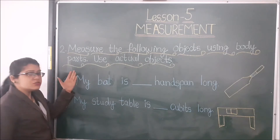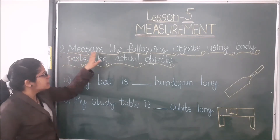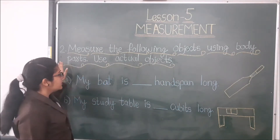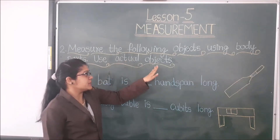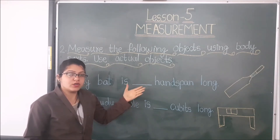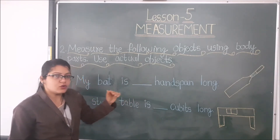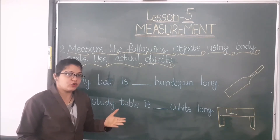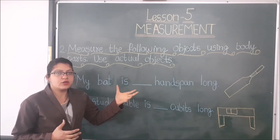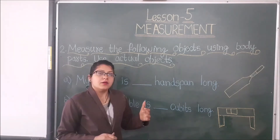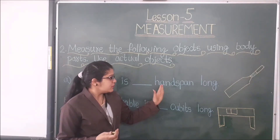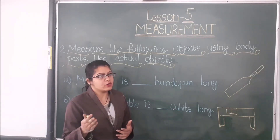Now students, let's see question number 2: 'Measure the following objects using body parts. Use actual objects.' In this question, you have to measure actual objects with your body parts. You can do this question at your home. Maybe your answers and my answers will be different, because my hand span and cubits are bigger than yours.